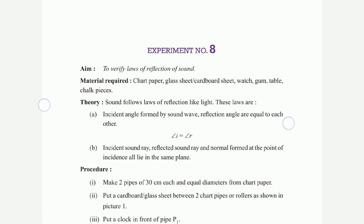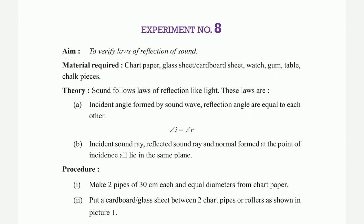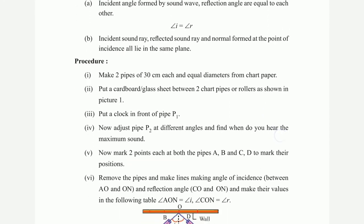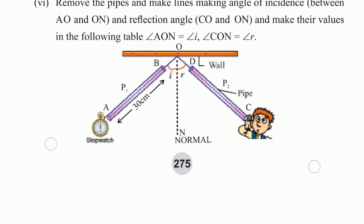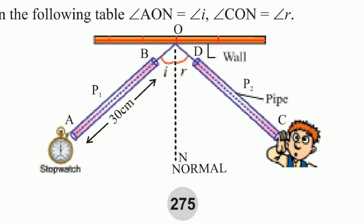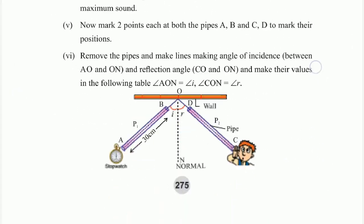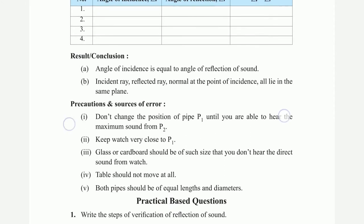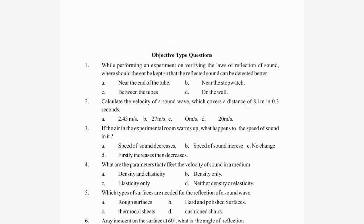Experiment number 8: to verify laws of reflection of sound. Materials include a chart and glass. Procedure: put a clock in front of the pipe and use a stopwatch against a wall. Five-point procedure. Observation: angle of reflection; result, conclusion, and practical-based questions.